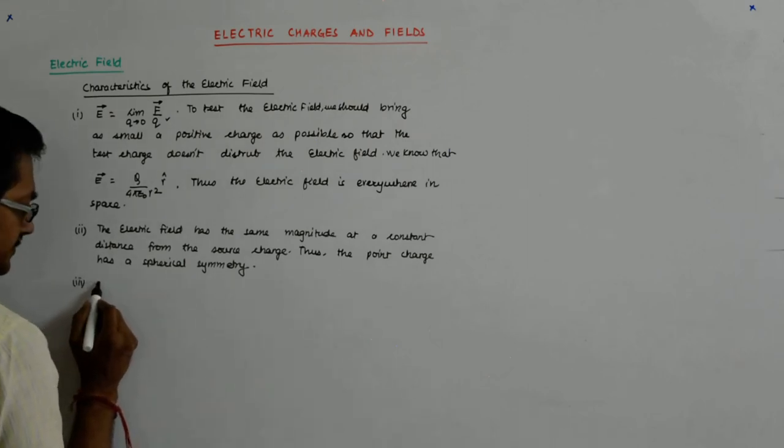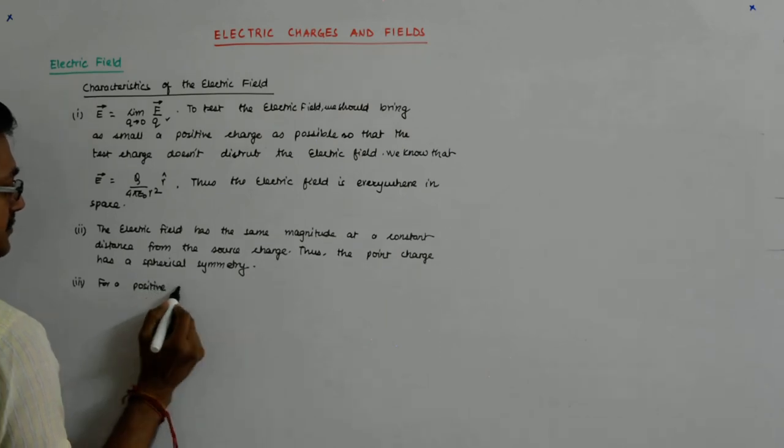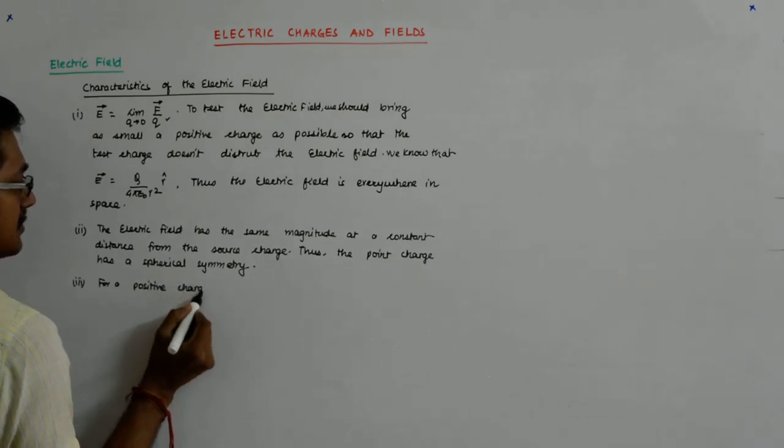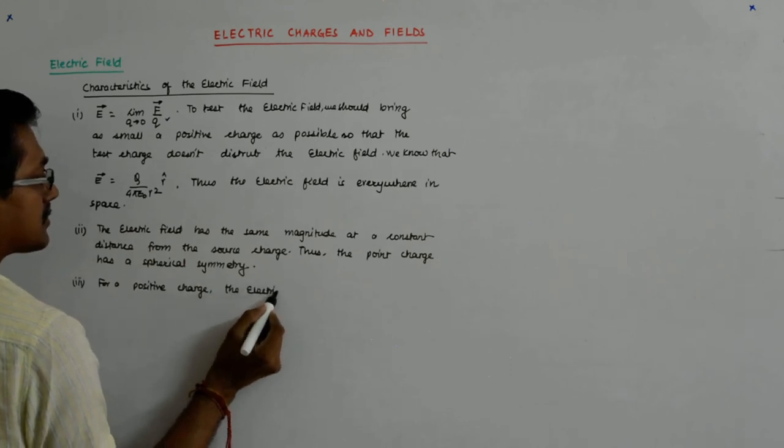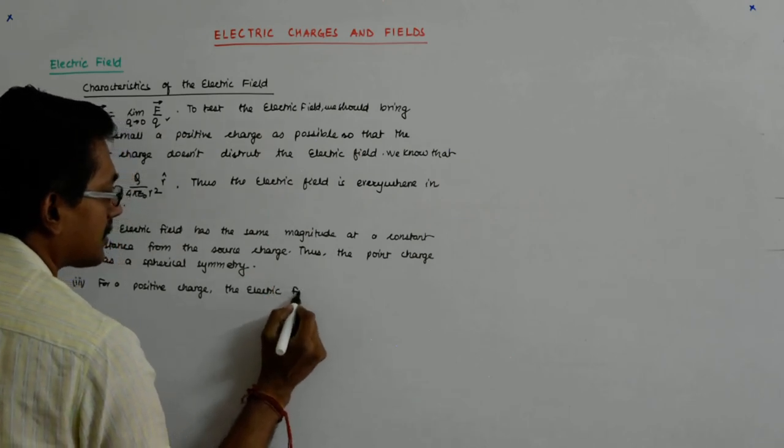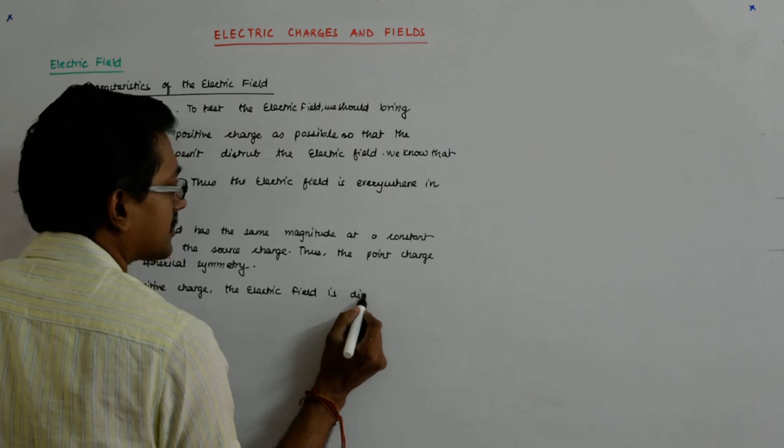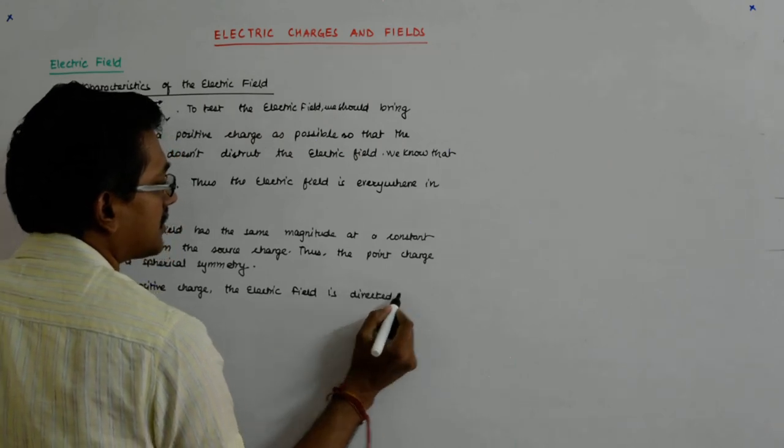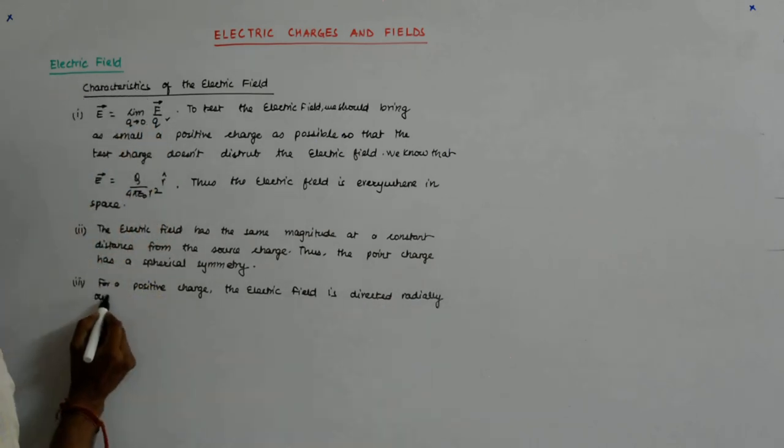And something that we discussed in the last video, that for a positive charge, the electric field is directed radially outward, radially outward.